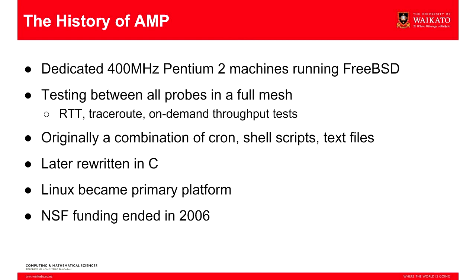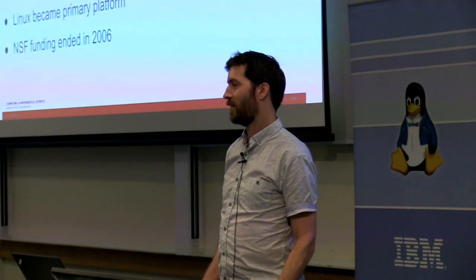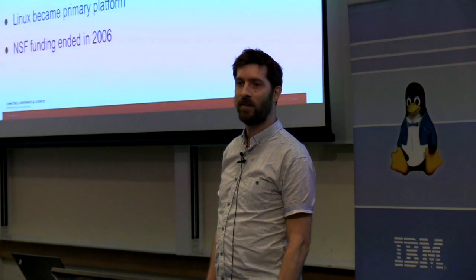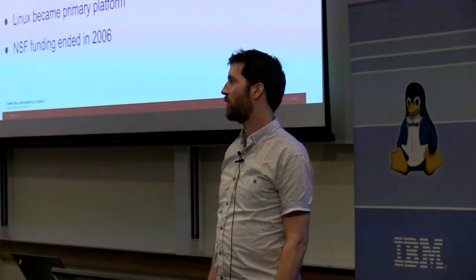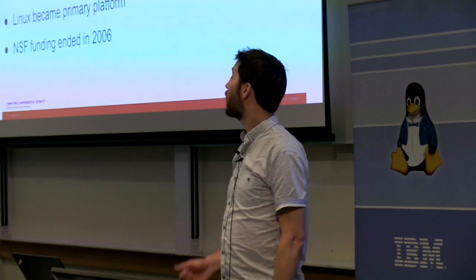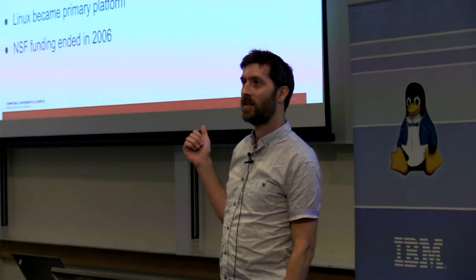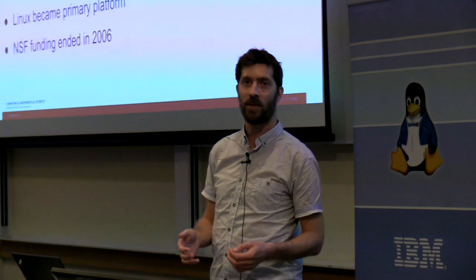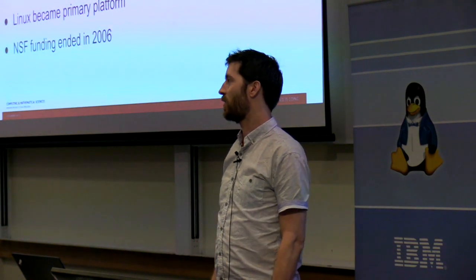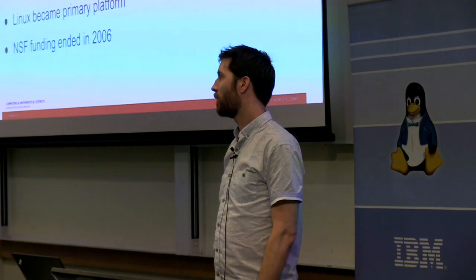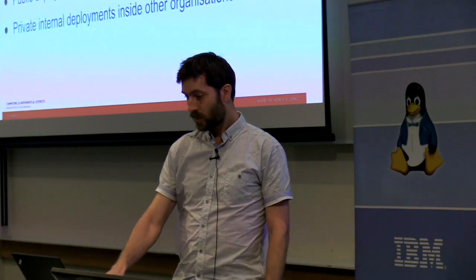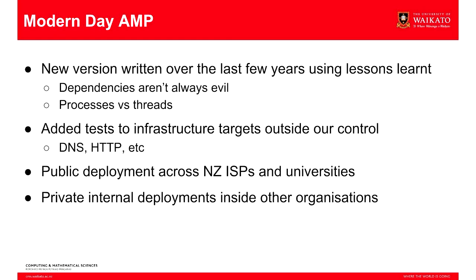This was later rewritten in C, and Linux became the primary platform. It slowly evolved throughout its life, adding tests and becoming more stable. Funding ended for that version of AMP in 2006 when the NSF stopped paying for HPC measurement through AMP, and the machines were decommissioned and turned off in the United States. We picked it up and carried on — Tony was at our university, interested in keeping the software developed, so we moved ahead on our own version measuring our own networks.